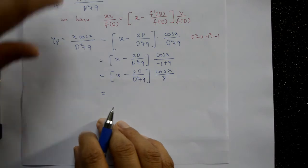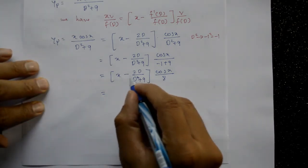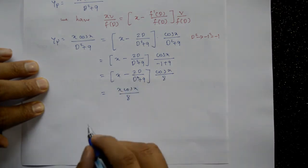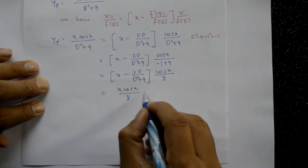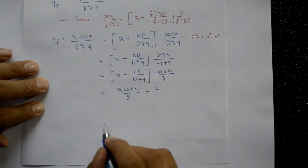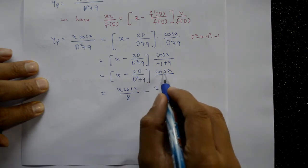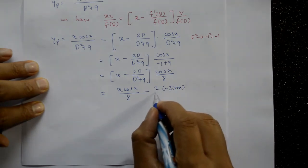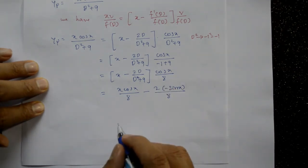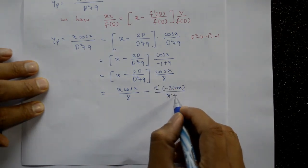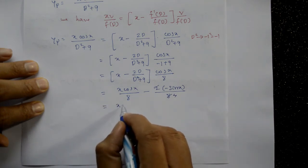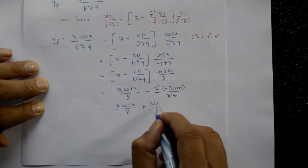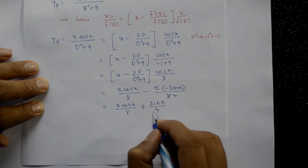Opening the bracket: x·cos(x)/8 minus (2/8)·D·cos(x) / (D²+9). Now D is a differential operator, so D(cos x) = −sin(x). The minus signs give: x·cos(x)/8 + sin(x)/4.